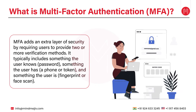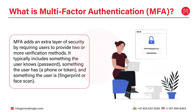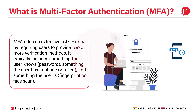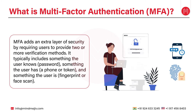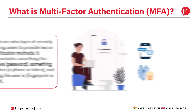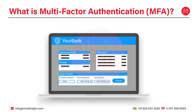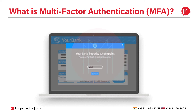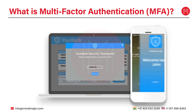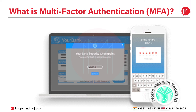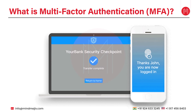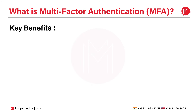The next point is what is multi-factor authentication or MFA. MFA adds an extra layer of security by requiring users to provide two or more verification methods. It typically includes something the user knows (a password), something the user has (a phone or token), and something the user is (a fingerprint or face scan). For example, when you log into your bank account using a mobile application, you first enter your password and then receive a code on your mobile device — this is two-factor authentication, which is a part of MFA.